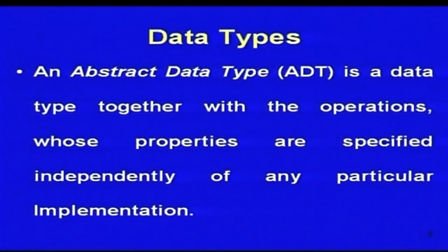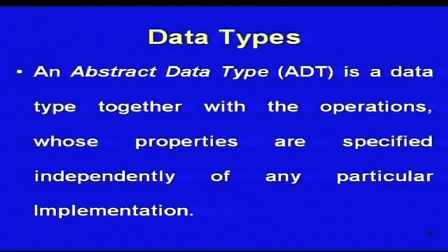Nowadays, because of the coming up of object-oriented programming languages, abstract data types have gained a lot of importance. When we talk about data types, we also talk about abstract data types. An abstract data type is like a black box in which you have a data type along with its operations, the properties are specified, and the user of the abstract data type does not have to know what particular implementation is used.